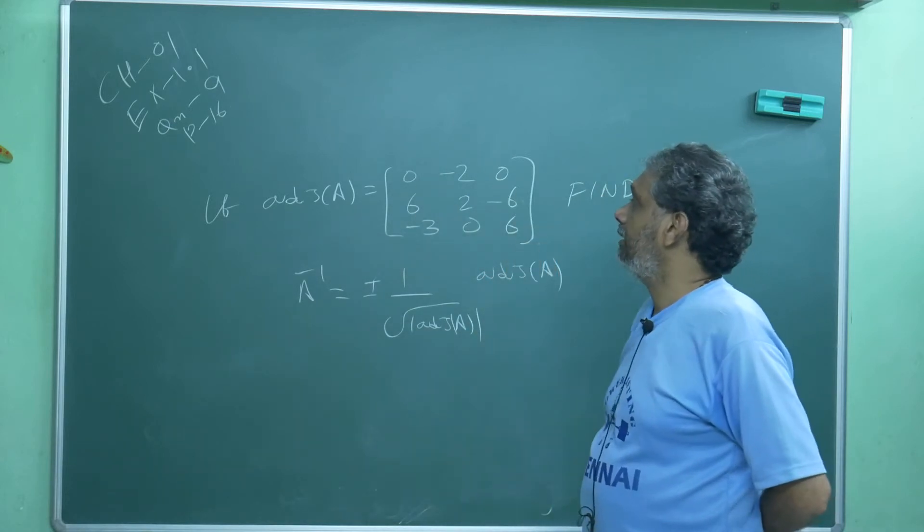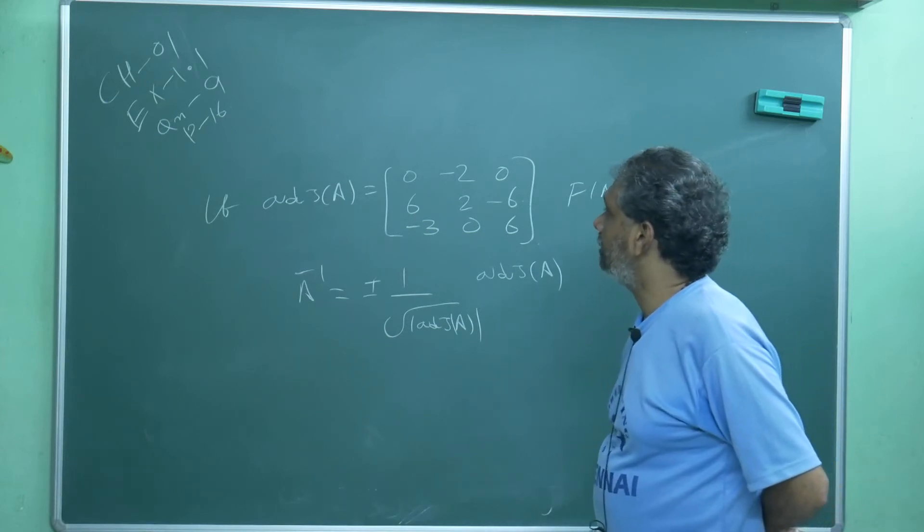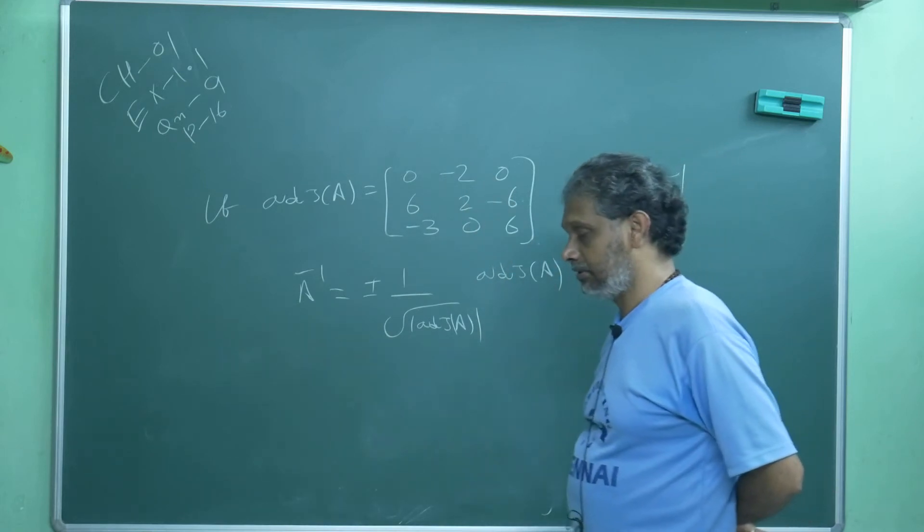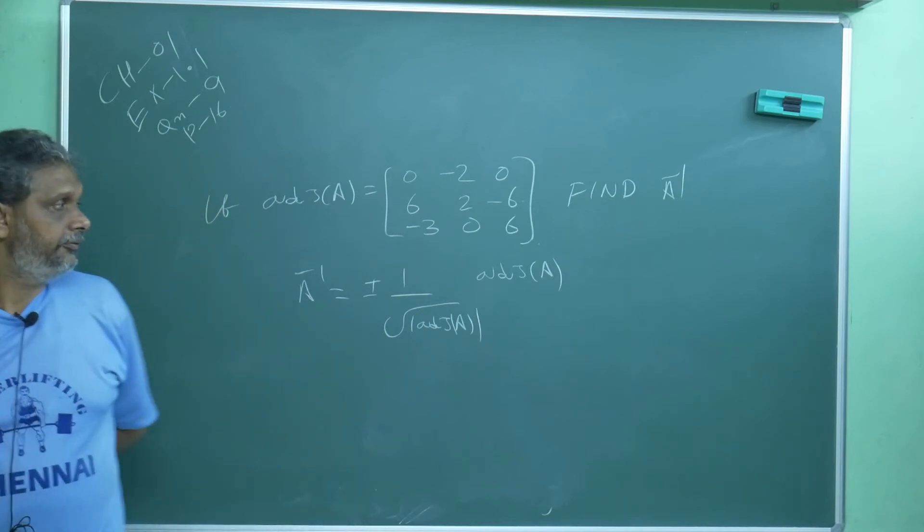If I expand by first row, the determinant is 1 into minus 2. My job is over because two elements are zeros anyway. So first my aim is to find the determinant of adjoint of A.